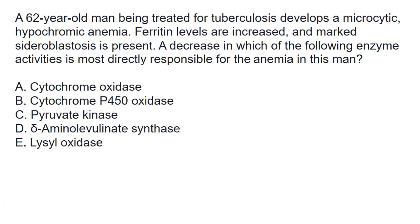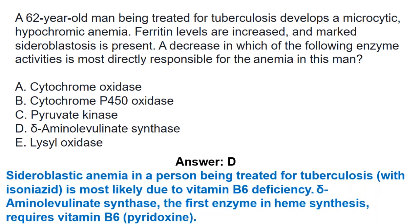A 62-year-old man being treated for tuberculosis develops a microcytic hypochromic anemia. Ferritin levels are increased and marked sideroblastosis is present. A decrease in which of the following enzyme activities is most directly responsible for the anemia? The answer is D, which is ALA synthase. The sideroblastic anemia in a person being treated for tuberculosis with isoniazid is most likely due to vitamin B6 deficiency. Delta-aminolevulinate synthase, the first enzyme in heme synthesis, requires vitamin B6.